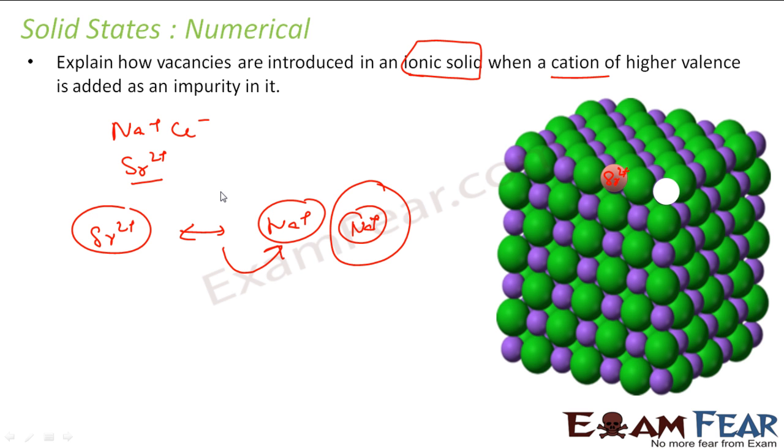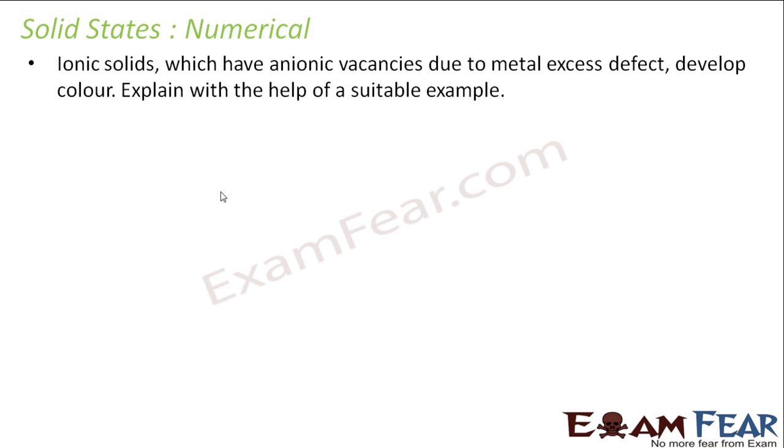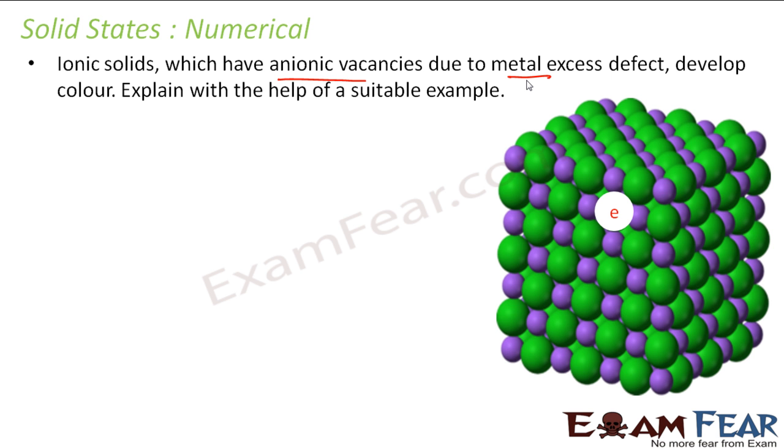The next question is: ionic solids which have anionic vacancies due to metal excess defect develop color. Explain with help of a suitable example. So we know now that these anionic vacancies in the metal excess defect have F centers. So let's take the example of NaCl itself. What happens is we have NaCl, you heat it, you pass Na vapors here, a lot of Na vapors here on this surface.